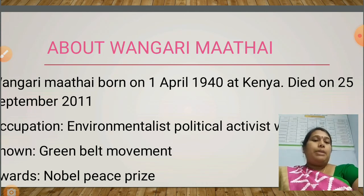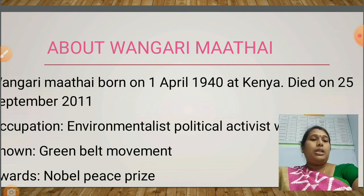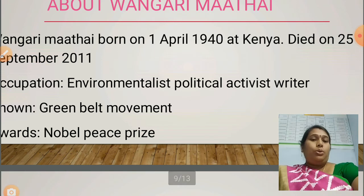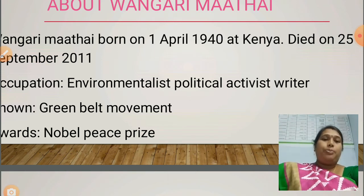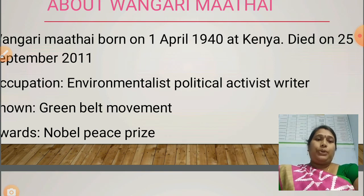Wangari Mate was born on 1st April 1940 in Kenya, and died on 25th September 2011. Her occupation is environmentalist, political activist and writer. She is famously known for the Green Belt Movement, which she also started. Her award: Nobel Peace Prize — she was the first woman to receive a Nobel Peace Prize from Africa.